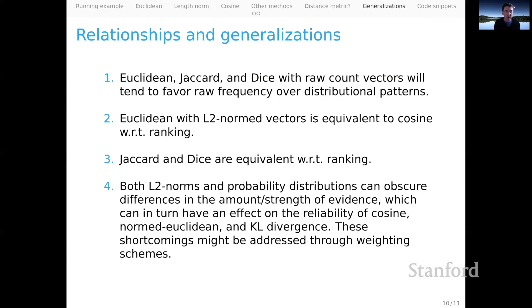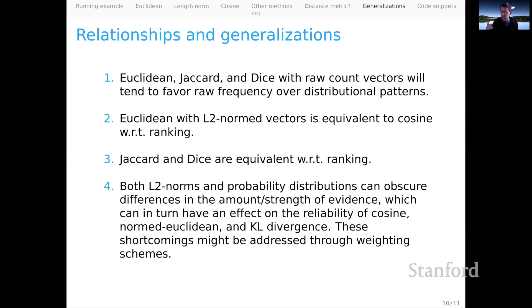A more fundamental point you'll see recurring throughout this unit: both L2 norming and the related calculation of creating probability distributions from rows can be useful steps, as we've seen, but they can obscure differences in the amount or strength of evidence you have. This can in turn affect the reliability of cosine, normed Euclidean, or KL divergence. These shortcomings might be addressed through weighting schemes. The bottom line is that there is valuable information in raw frequency. If we abstract away from it, some other information may surface, but we might also lose that important frequency information — and it can be difficult to balance these competing pressures.